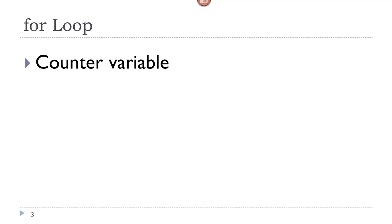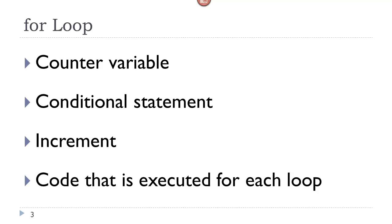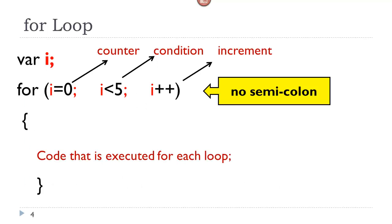A for loop involves four different components: a counter variable, a conditional statement, an increment, and some code that is executed for each loop. Let's take a look at the syntax of a for loop — a very commonly used loop.